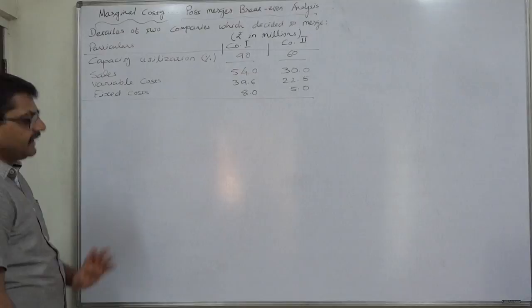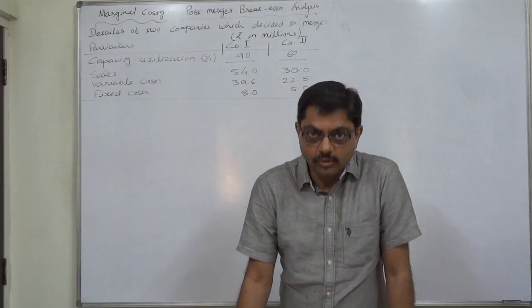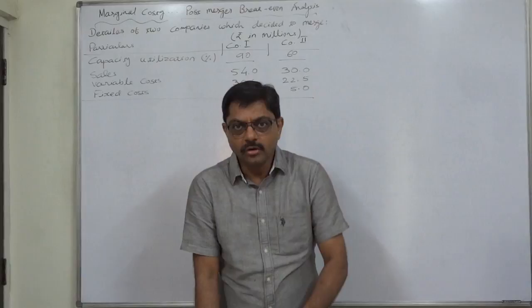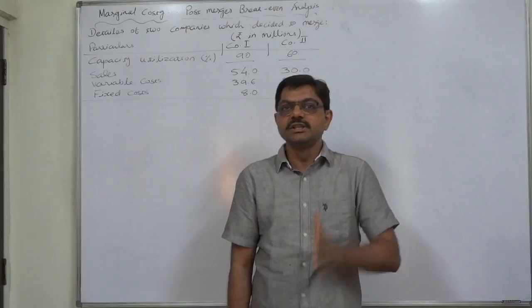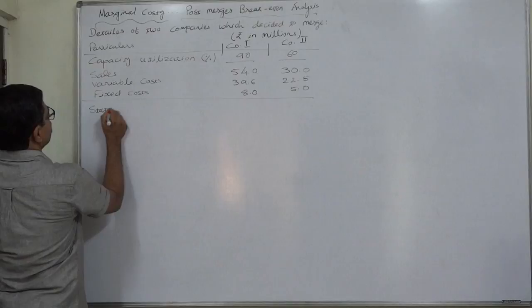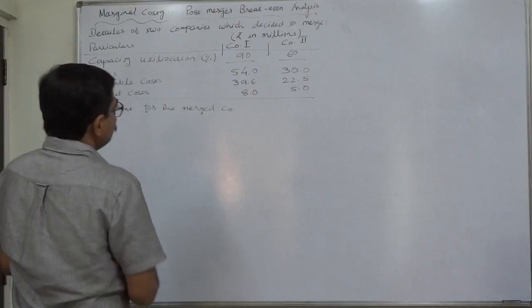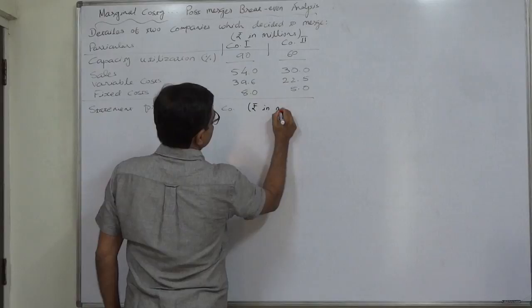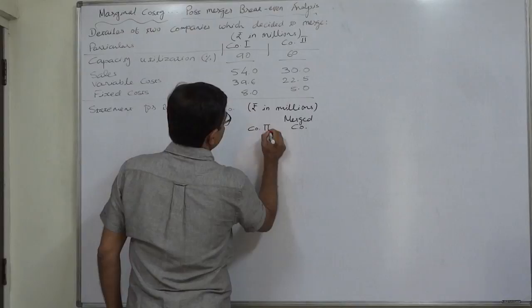We have to prepare a statement of sales, variable cost, and contribution of the merged plant on the basis of 100% capacity utilization. That will show what the amounts of sales, variable cost, contribution, as well as fixed cost of the new merged single company or plant will be post-merger. We will keep the same format: rupees in million — Company One, Company Two, as well as the merged company.